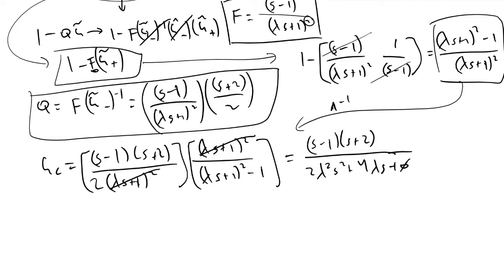We now want to analyze what our G_C term is, because we want to find the range of lambda that keeps our controller stable. The whole point of IMC is to design controllers and determine the tuning parameters and the ranges we can move these tuning parameters to maintain a stable system.